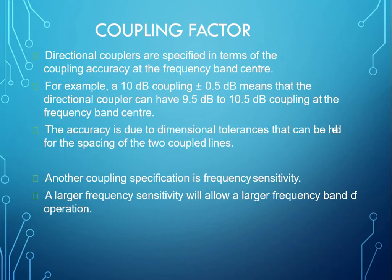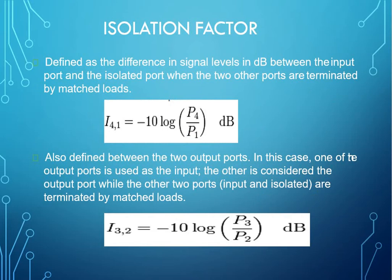Now comes the isolation factor. Defined as the difference in signal levels in dB between the input port and the isolated port when the two other ports are terminated by matched loads. It is defined to describe the directive properties of a directional coupler. Also defined as ratio of incident power to the back power. Isolation in dB equals the coupling factor plus directivity.